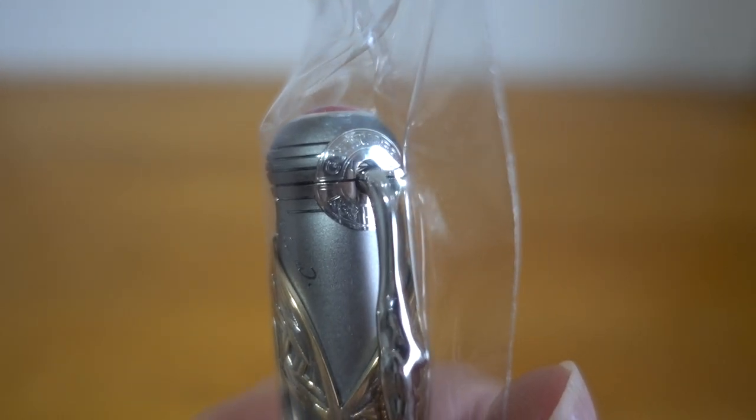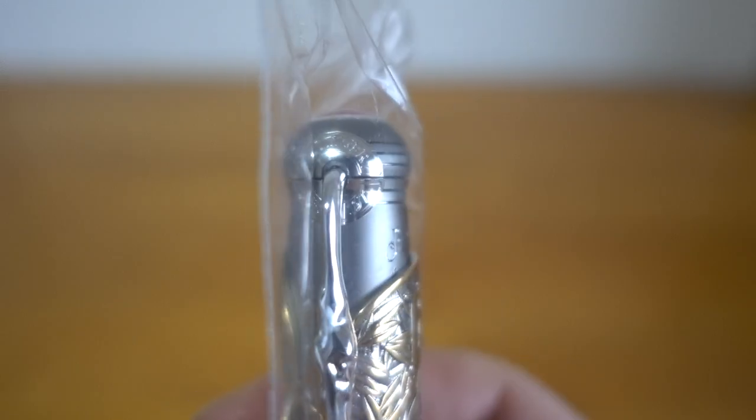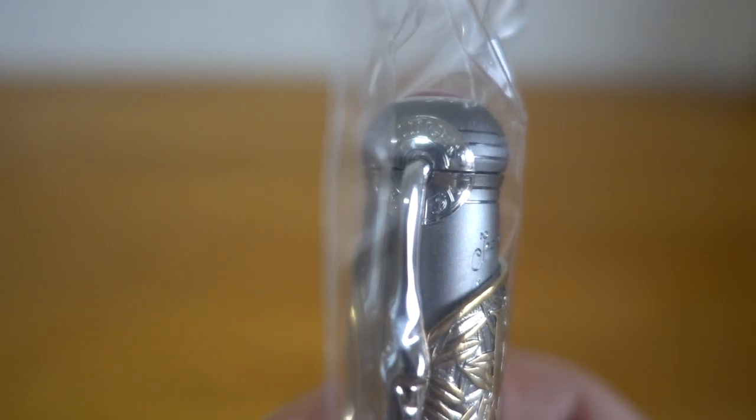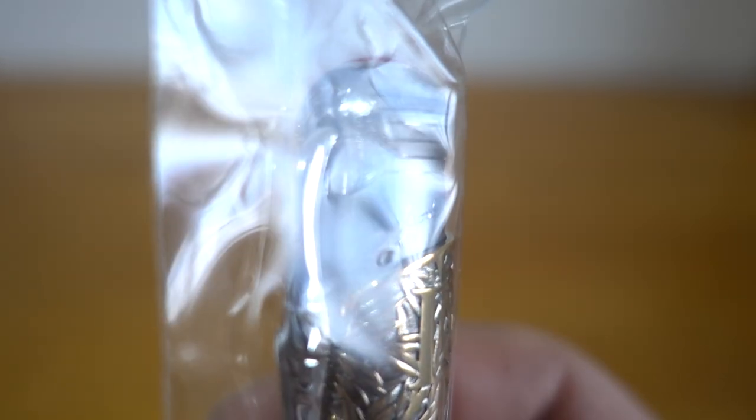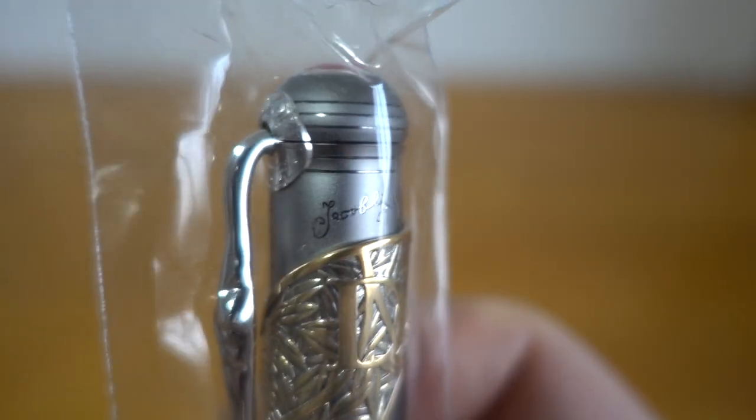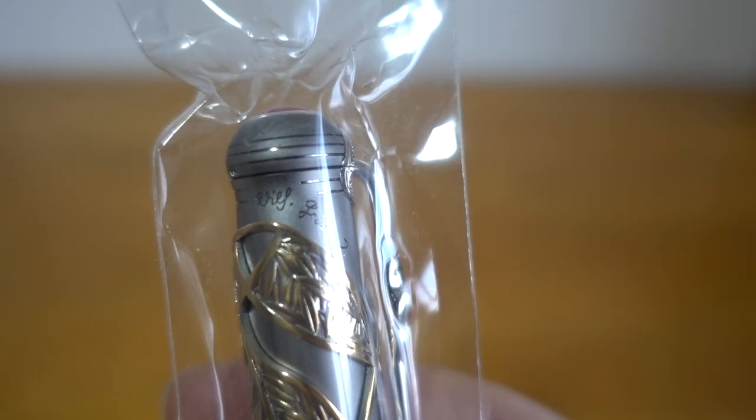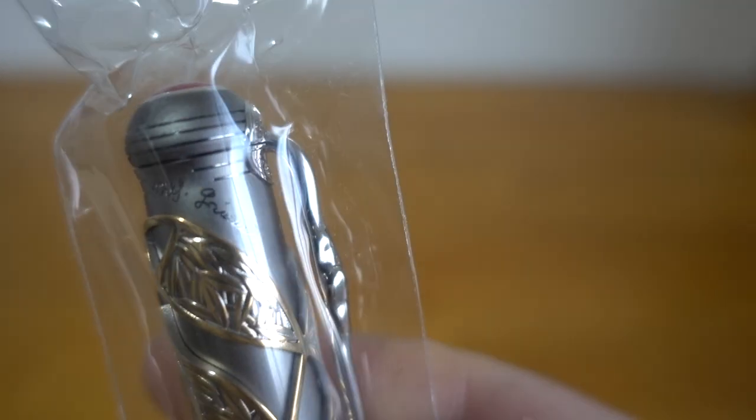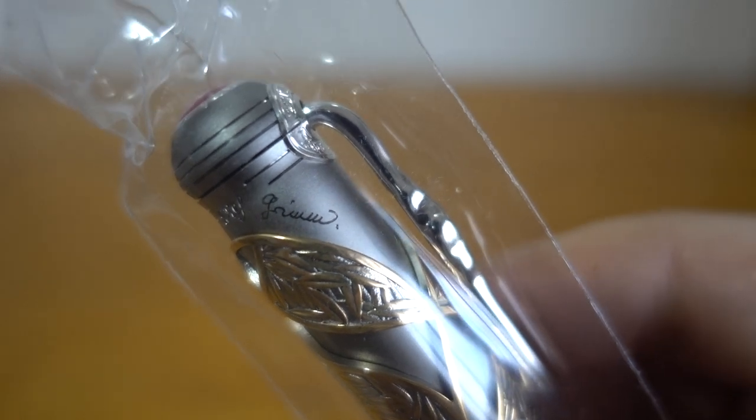Which, like the other version of this pen, references the time it took to translate their work into English, or possibly the time it took to finish their dictionary, the German dictionary. So there you've got the signature of the first brother, and then Wilhelm here on the other side. Nice, subtle inscription on the cap.